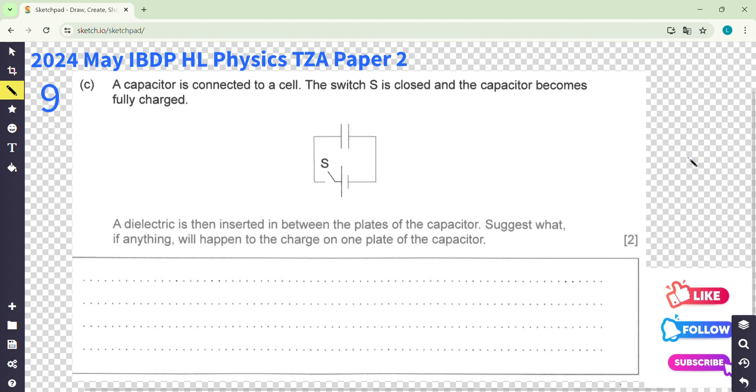You have the switch here, and it becomes fully charged. It's connected. They change it to connect here, so it's connected with a constant voltage. We have a capacitance here and the charge here.